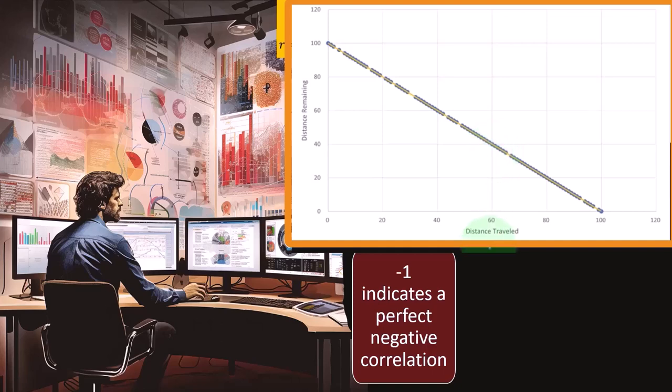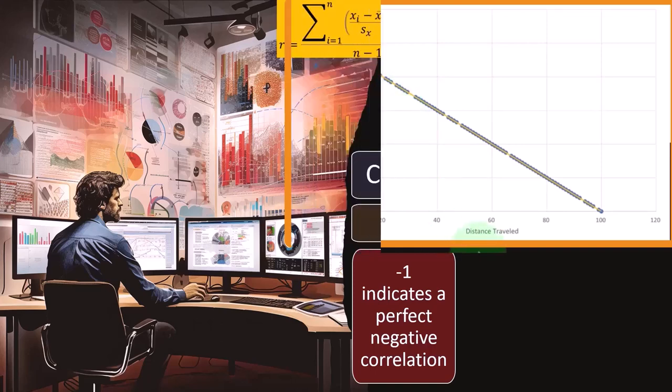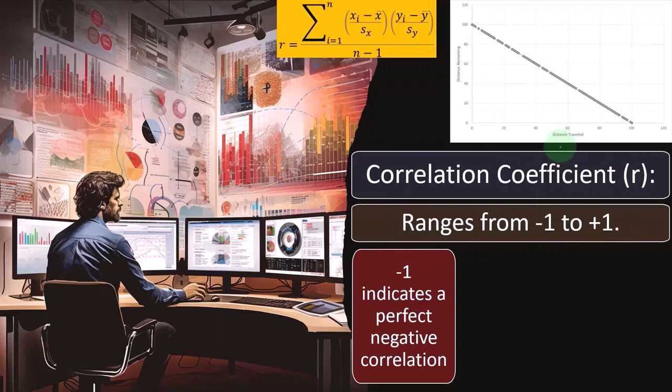In that case, you would think of the distance traveled normally as the independent variable, but you could flip them. You could think of the distance remaining and look at it that way. You would still get a downward sloping line. But obviously, in this case, if we were mapping this out, we would probably think the thing that we are doing is traveling, and that's causing the distance remaining to be dependent upon that.